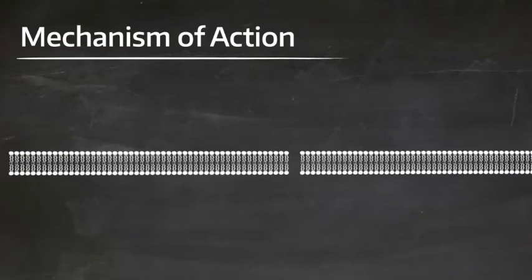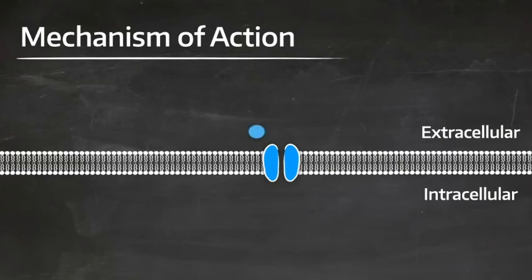Now let's look at their mechanism of action. Local anesthetics inhibit voltage-gated sodium channels of neuronal axons to inhibit the propagation of action potentials, and they do this preferentially at thin neurons, which are the ones that carry pain and temperature sensation.